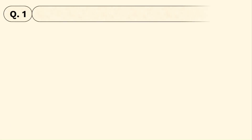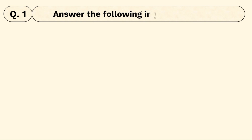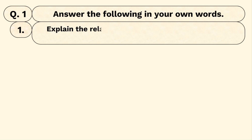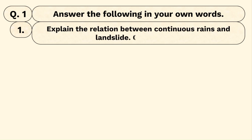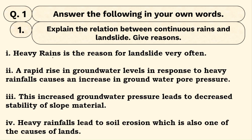Question number one: answer the following question in your own words. The first question is: explain the relation between continuous rains and landslide. So first of all, what is continuous rain? Continuous rain means heavy rains that don't stop — heavy rains ho rahi hain.